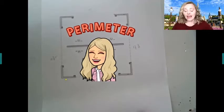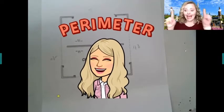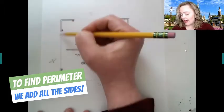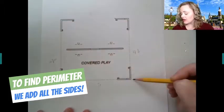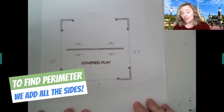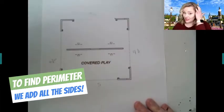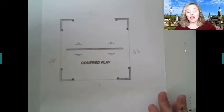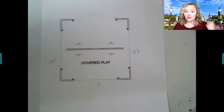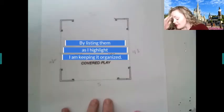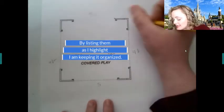So to find perimeter, we add all the sides. If we wanted to figure out how long this would be, you know this is just a model so I measured it in inches, so we would have to actually use a yardstick or a tape measure and measure around the actual one to see what it would be in feet, okay.